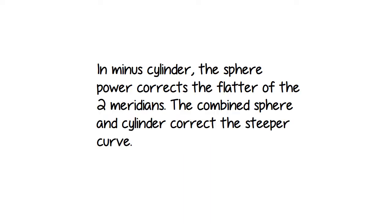One of the things that made me think of this is that I saw a question today in a test review, a COT test review manual, something to this effect. But I wanted to point out that in minus cylinder, the sphere power corrects the flatter of the two meridians, and the combined sphere and cylinder correct the steeper curve. And that's a little confusing, but I'm going to draw it out.